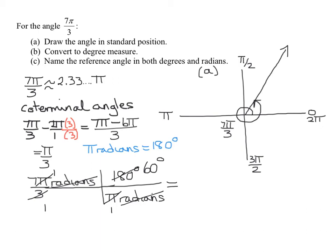So my answer is, don't forget I have a 7 here, 7 times 60 degrees all divided by 1. So what's my answer? My answer is 7 times 6 is 42. So it's going to be 420 degrees. So that is the answer to part B.